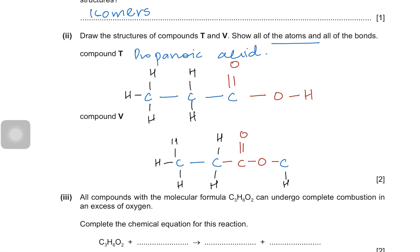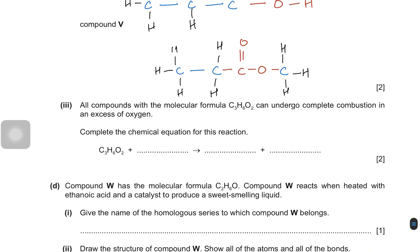All compounds with the molecular formula C3H6O2 can undergo complete combustion in excess of oxygen. Complete the chemical equation. So three carbons means three carbon dioxides. And six hydrogen atoms mean three water molecules. How many oxygens do we need? So we need six oxygen atoms to make carbon dioxides. And three oxygen atoms to make waters. So three plus six is nine. We need nine over two oxygen molecules.